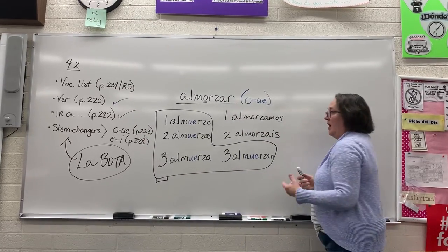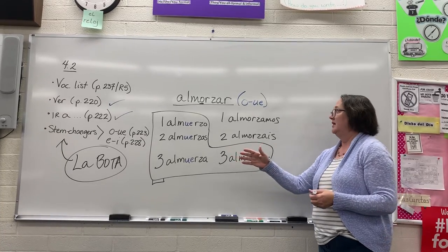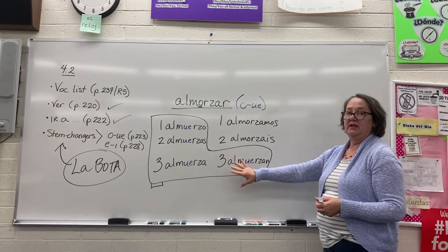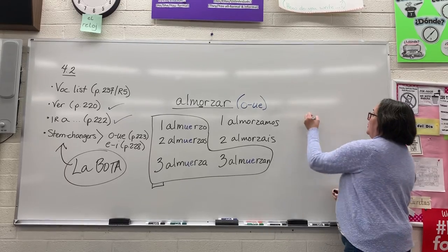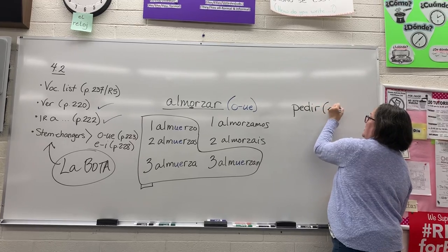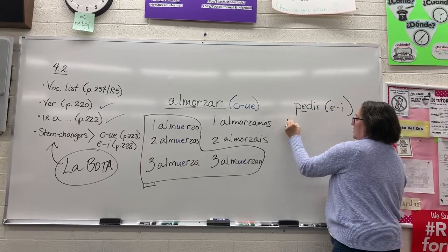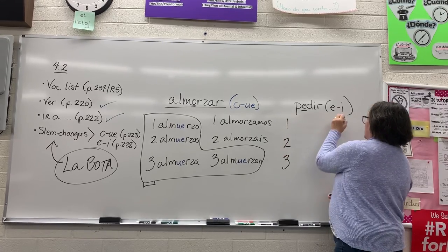Now the most common verbs that are stem changers are e to ie, which we've already learned. This is the second most common, and now the third most common would be e to i. That would be something like pedir. Pedir goes e to i, so this little guy is going to change.